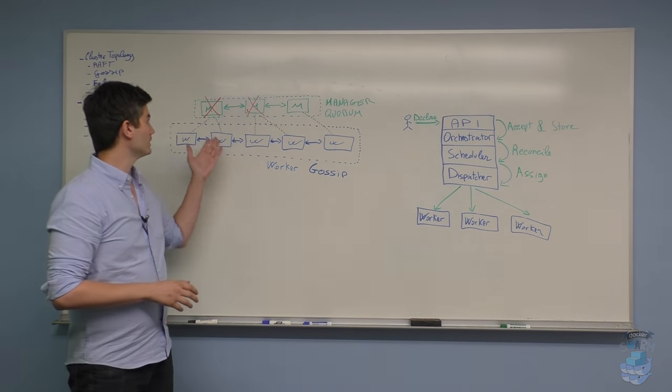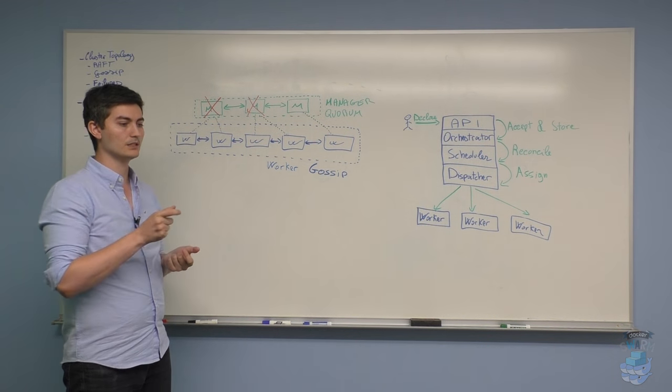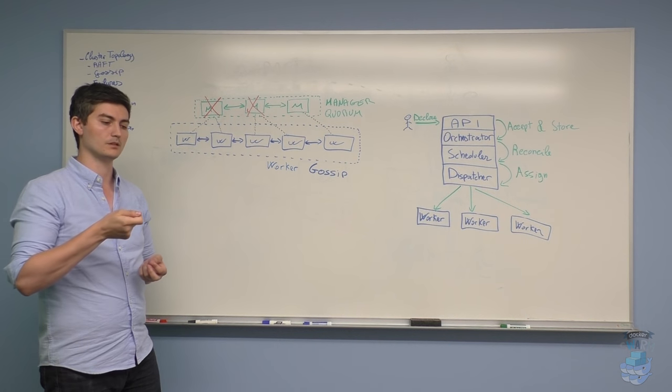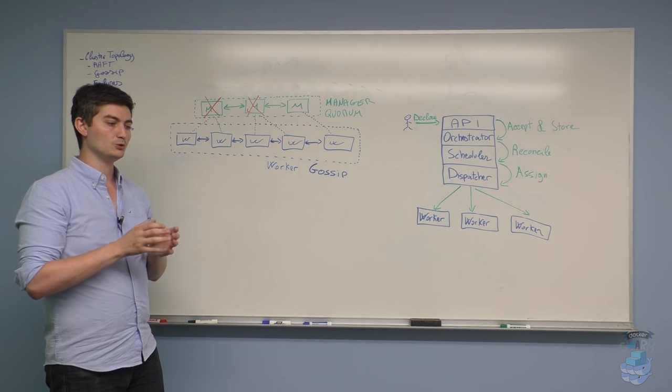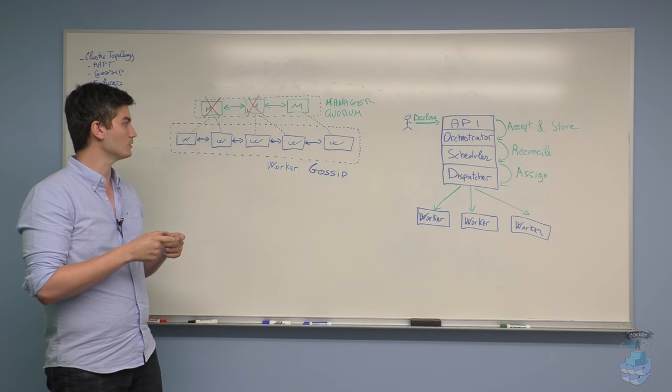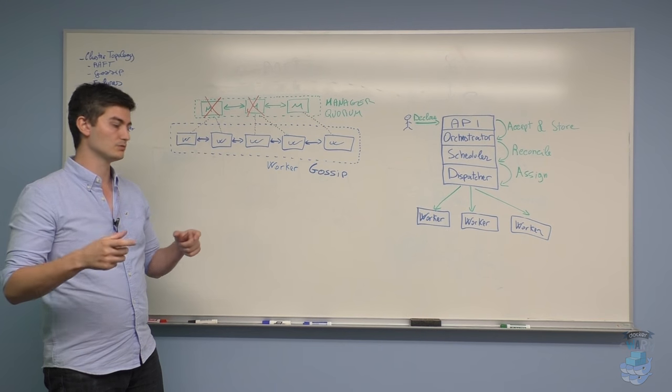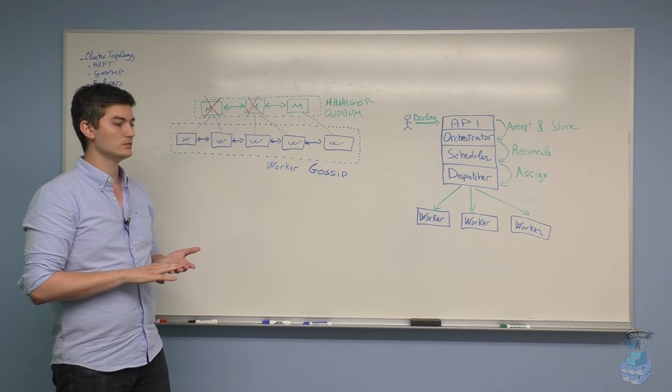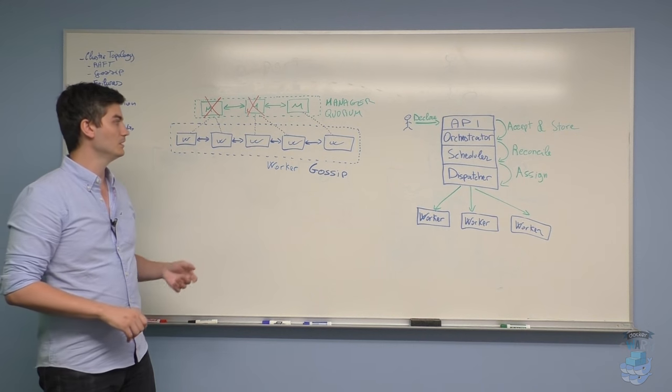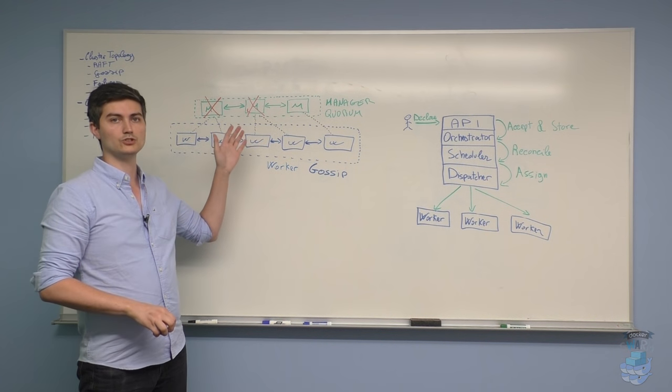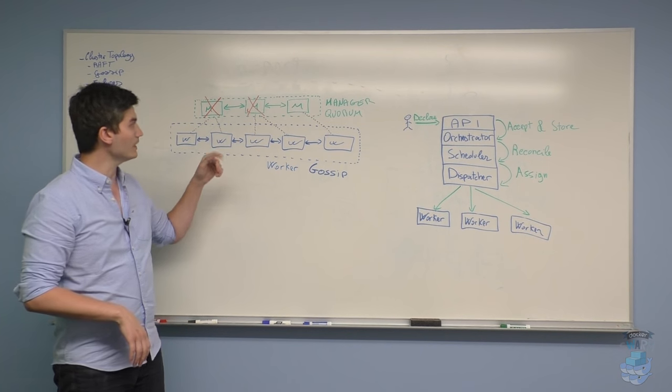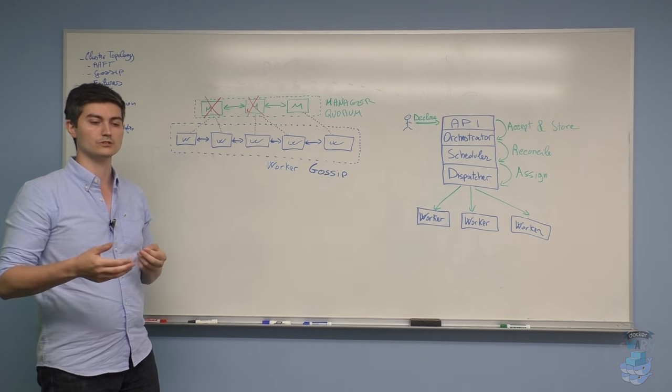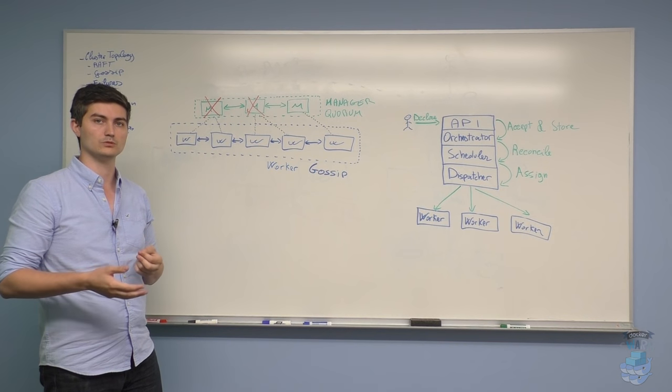The way it works is that every manager has a CA built in. Whenever a new node wants to join a swarm, you have to give it a join token. A join token is an opaque string that you give to the join command, and it contains some information encoded. First of all, it contains the fingerprint of the swarm CA, which means the worker is able to trust that it's actually joining the right entity. At the same time, that token also contains a secret that allows the manager to make sure that the worker currently joining was actually authorized to join the swarm.